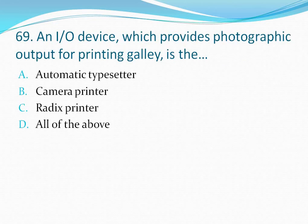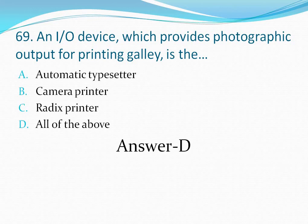Question number 69: An input/output device which provides photographic output for a printing gallery is the — your options are: option A automatic typesetter, option B camera printer, option C Radix printer, option D all of the above. The correct answer is option D — all of the above.